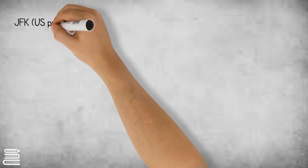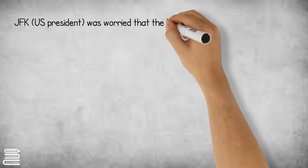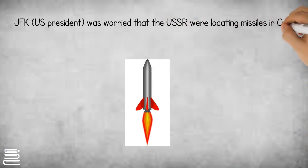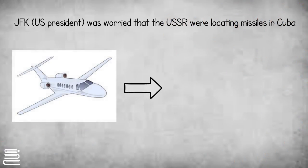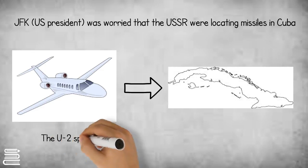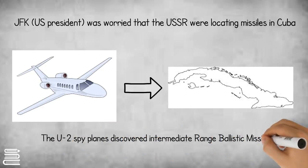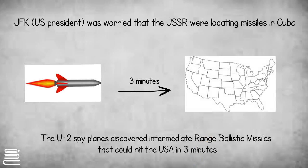John F. Kennedy, who was the president of the USA at the time, worried that the USSR were locating missiles in Cuba. He sent U-2 spy planes over Cuba and discovered that the USSR had set up intermediate-range ballistic missiles which could hit the USA in three minutes.